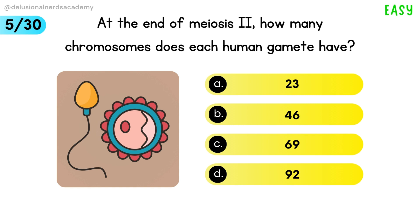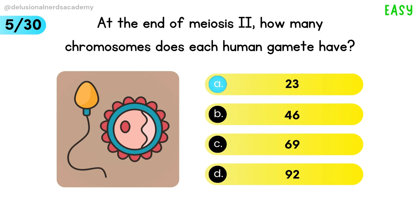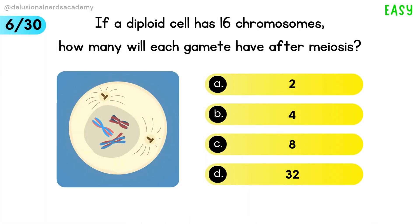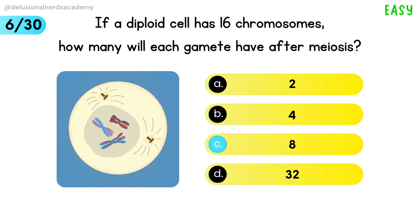At the end of meiosis 2, how many chromosomes does each human gamete have? 23 is the answer. If a diploid cell has 16 chromosomes, how many will each gamete have after meiosis? Eight is the answer.